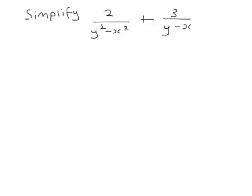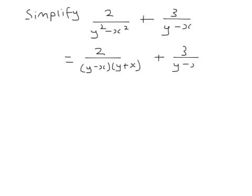Here we've got something to simplify, an expression to simplify where we've added the fractions. So y squared minus x squared factorises to be y minus x, y plus x. This is called the difference of two squares. There's two expressions that have been squared, y squared minus x squared, and that factorises to be y minus x times y plus x.